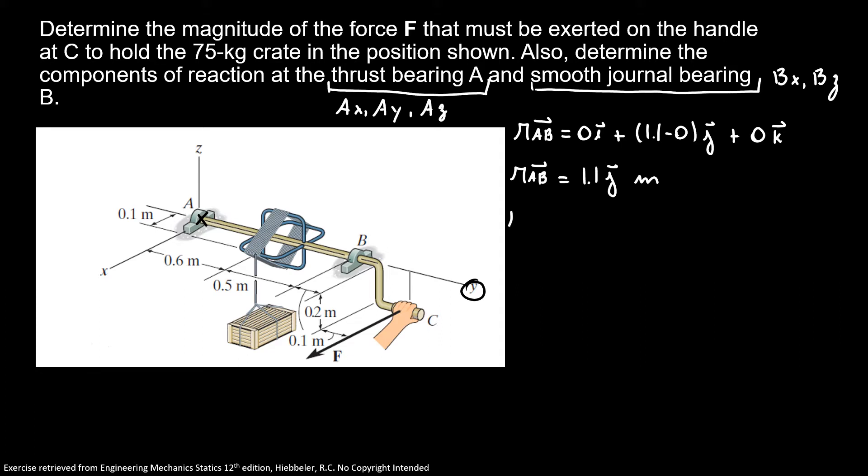Now, our distance AC, we have 0i plus (1.4 minus 0)j plus (-0.2 minus 0)k. So our distance AC, where our force F is, is 1.4j minus 0.2k meters.